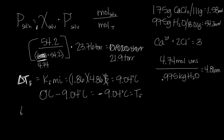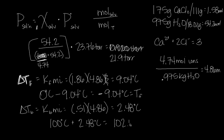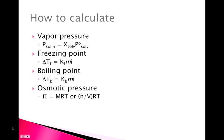For boiling point elevation: ΔTb = Kb × molality × i. The boiling point constant is 0.51, and molality is 4.86 molal. 0.51 × 4.86 = 2.48°C. This is boiling point elevation, so we add it to the normal boiling point of water: 100 + 2.48 = 102.48°C is the new boiling point of the solution.